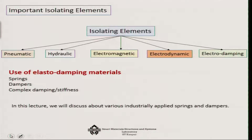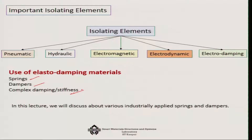For isolating elements, we have pneumatics, hydraulics, electromagnetic, electrodynamic, and elastro-damping type of materials. Particularly in the elastro-dynamic damping category, we have springs, dampers, and complex dynamics and damping and stiffness matrices. There are other categories which I will touch upon when we discuss active control. First we will focus on the springs and then go to the dampers.